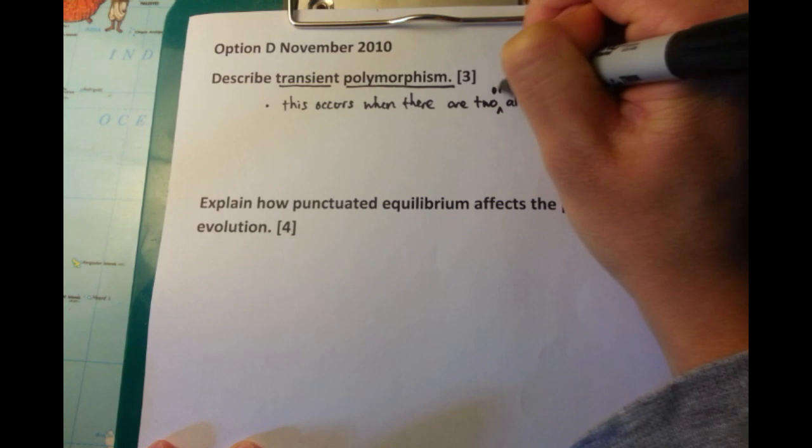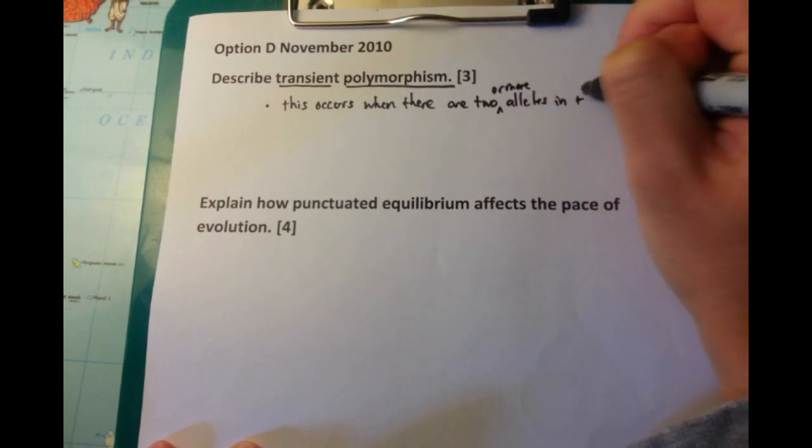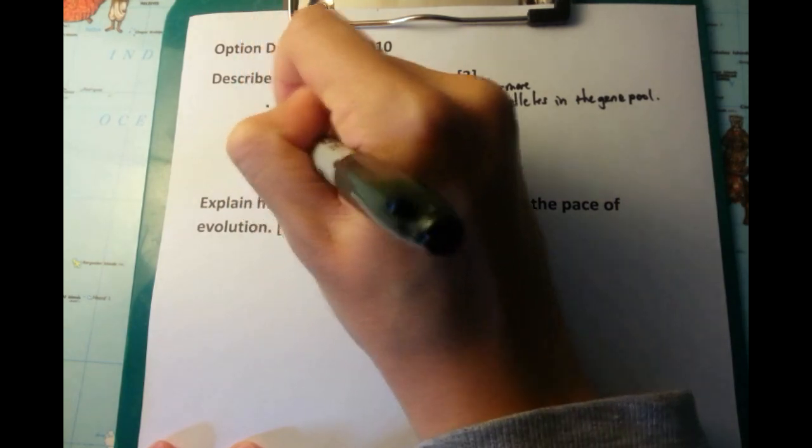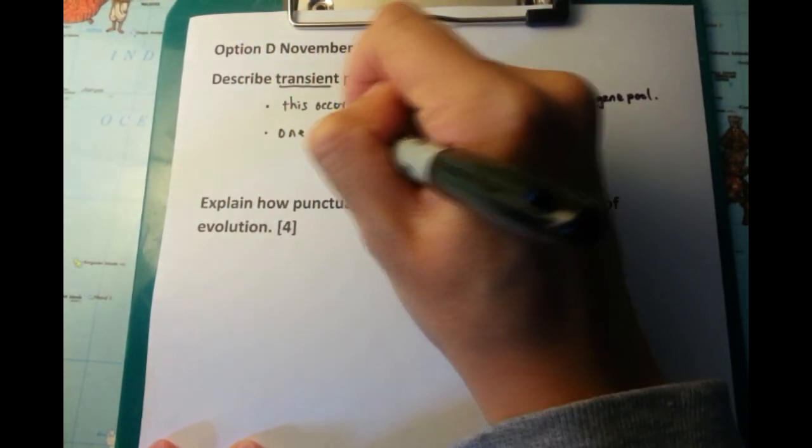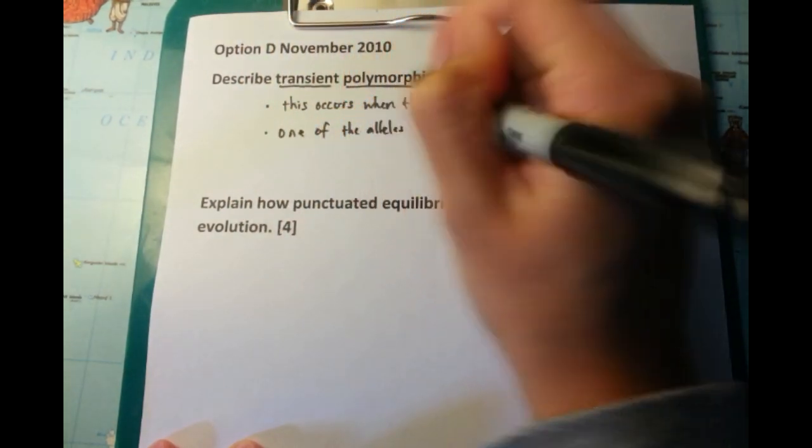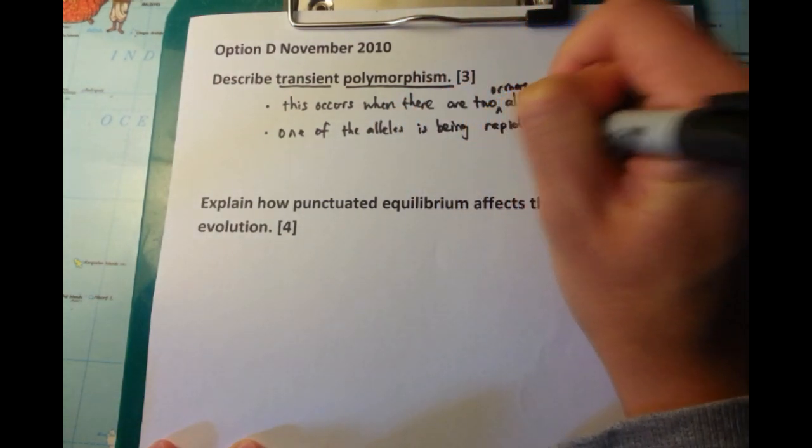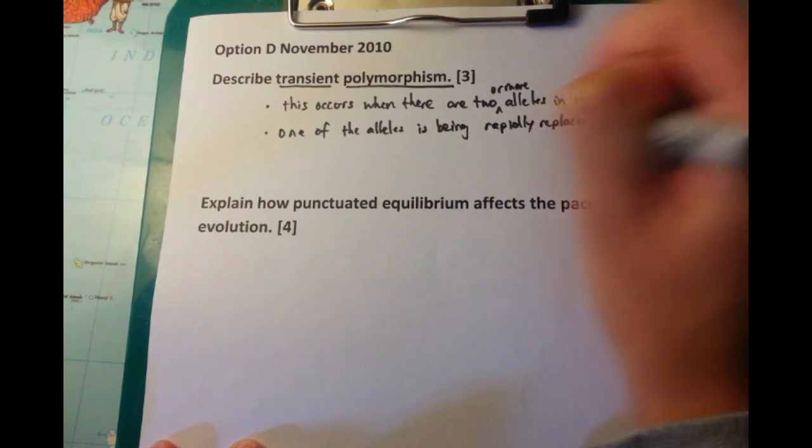Now, this occurs when there are two or more alleles in the gene pool. For example, there's a particular type of moth that was found during the Industrial Revolution in England, and normally it has two particular alleles, one for a black-coloured moth, one for a white-coloured moth.